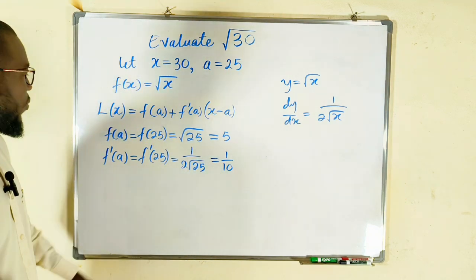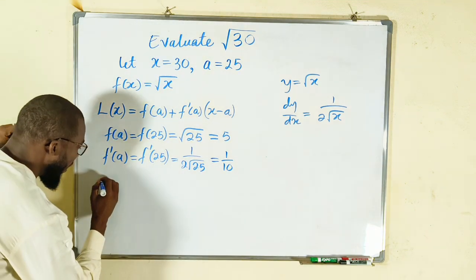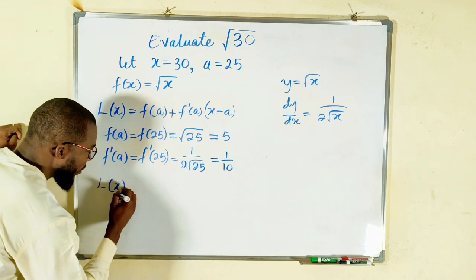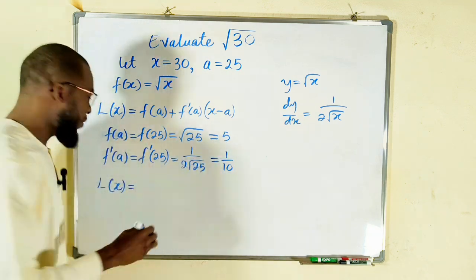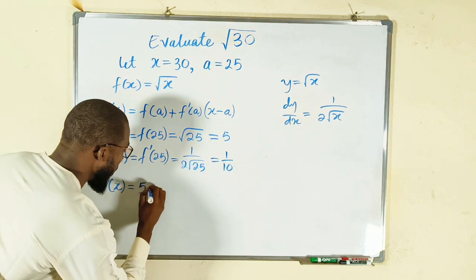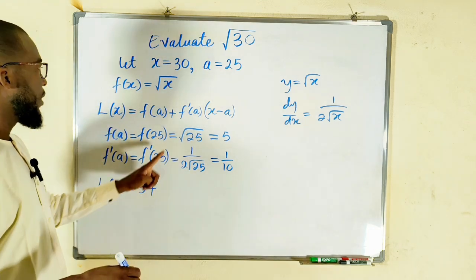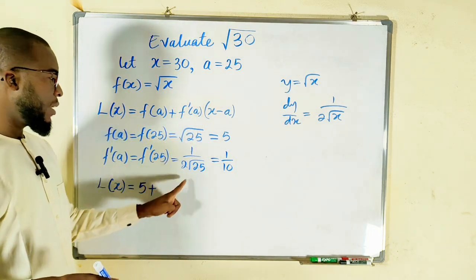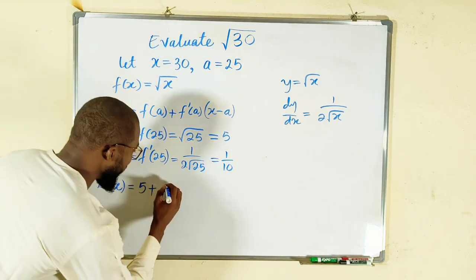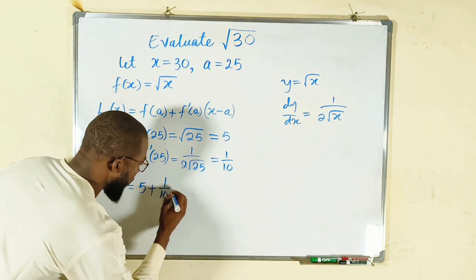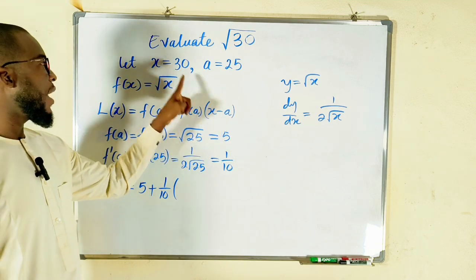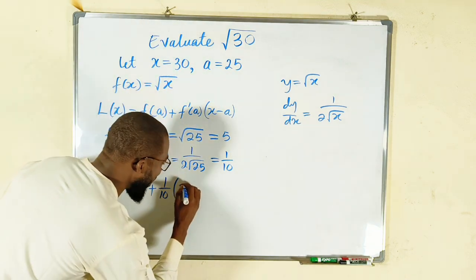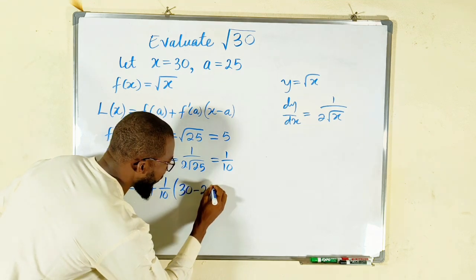I think we can now substitute into this. Therefore, L(x) is equal to f(a). f(a) is 5, so we have 5, plus f'(a), which is 1 divided by 10, multiplied by x minus a. x is 30, a is 25. So we have 30 minus 25.